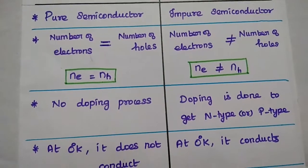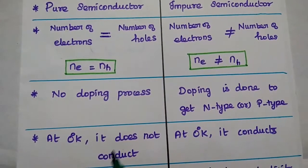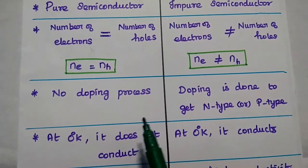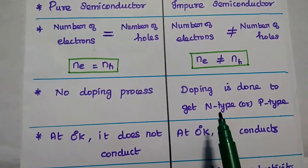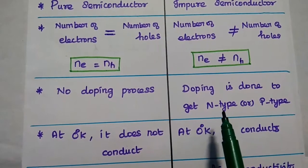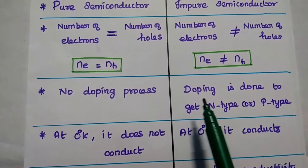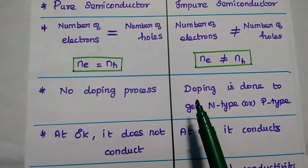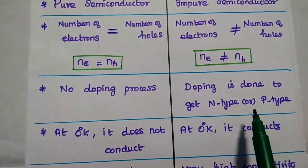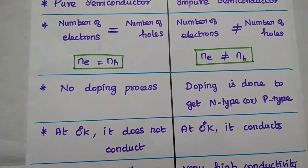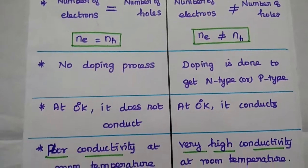Doping process is not necessary in intrinsic semiconductor. But for extrinsic semiconductor, we need to add impurities — doping is important. Doping is done to get N-type or P-type semiconductor material.